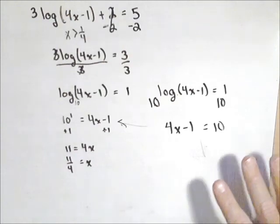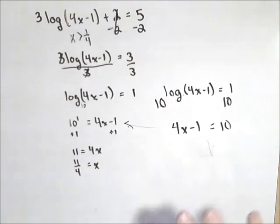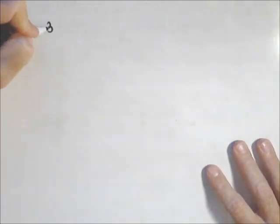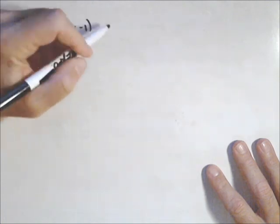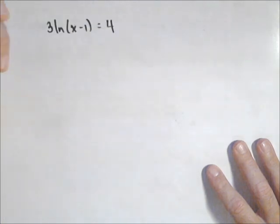Now this goes with pretty much a log of any base. So let's say we had a natural log. So three ln of x minus one equals four, for instance.